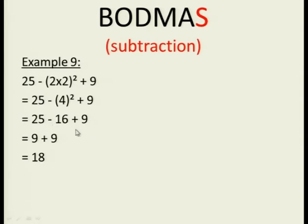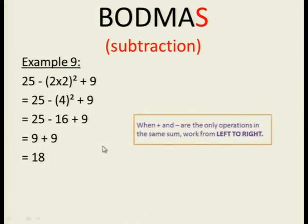25 minus 16 plus 9. But when addition and subtraction are the only operations in the same sum, only subtraction and addition together, we work from left to right. So now even although subtraction is before the addition, the rule is the same as when we have division and multiplication as the only two operations in the sum. When addition and subtraction are the only two operations, we work from left to right. So we say 25 minus 16 is 9. Plus that 9, we get 18. Don't forget this rule. It can sometimes be easy to forget it.